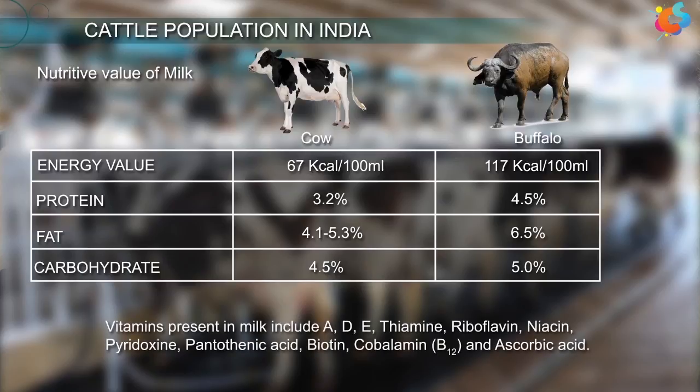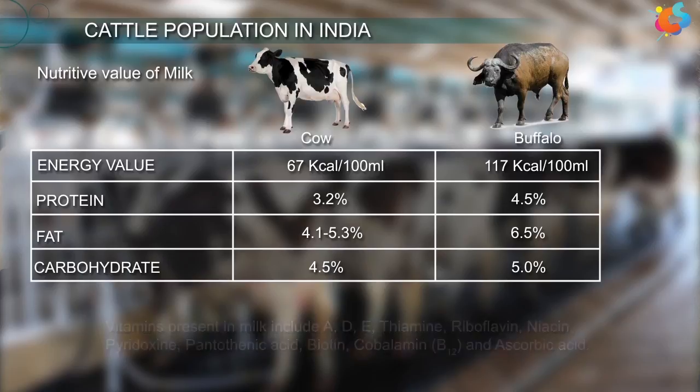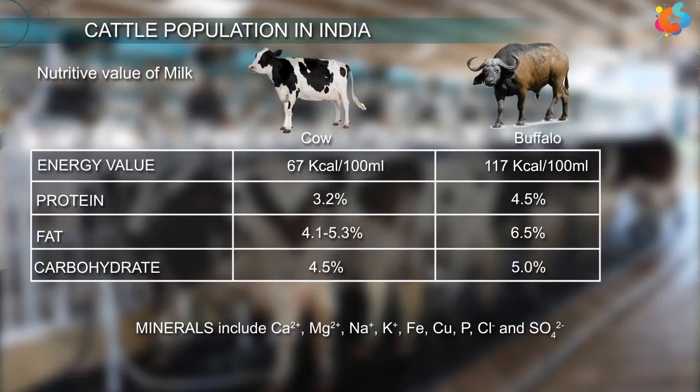Vitamins present in milk include Vitamin A, D, E, Thiamine, Riboflavin, Niacin, Pyridoxine, Pantothenic Acid, Biotin, Cobalamin (B12), and Ascorbic Acid. Minerals include Calcium, Magnesium, Sodium, Potassium, Iron, Copper, Phosphorus, Chlorine, and Sulfate.